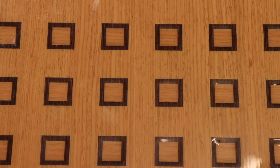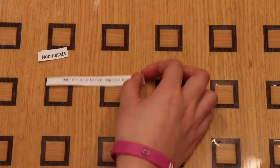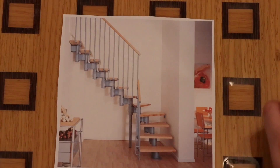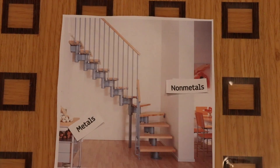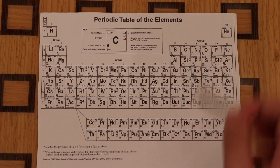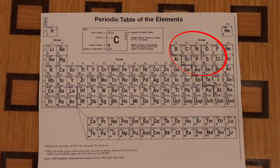Now let's move on to non-metals. Non-metals gain electrons to form negative ions, also known as anions. They are found to the right of the staircase, and about one-third of all elements are non-metals. The most active non-metals are found in the upper right-hand corner, but exclude the noble gases since they are inert, or non-reactive.